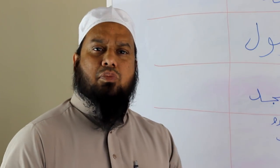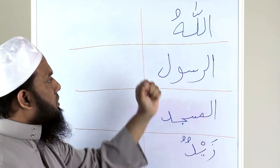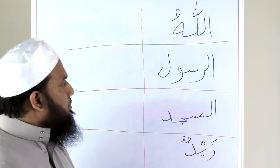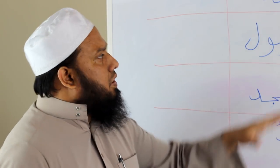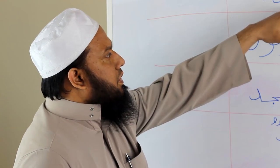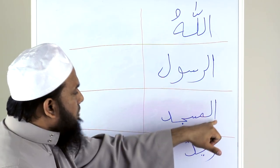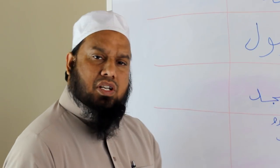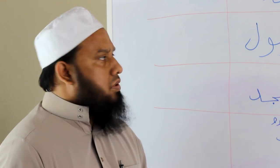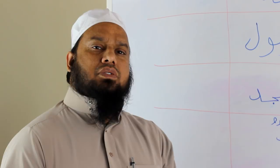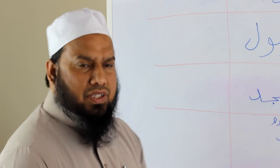These are all known in Arabic as ism. Allahu, Ar-Rasool, Al-Masjid, Zayd — these are all ism. You will notice that Allah has Alif-Lam, Ar-Rasool has Alif-Lam, Al-Masjid has Alif-Lam, but Zayd doesn't have Alif-Lam. In Arabic, to make nouns definite, you need Alif-Lam or proper nouns. Pronouns are also known as ism.